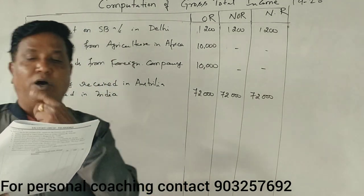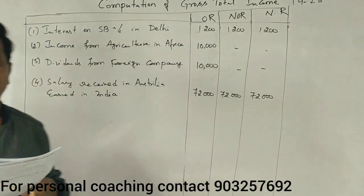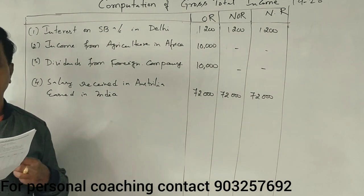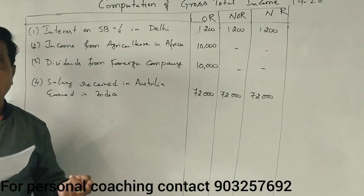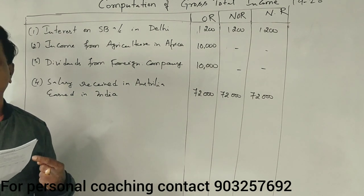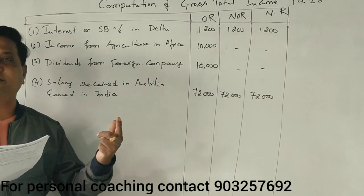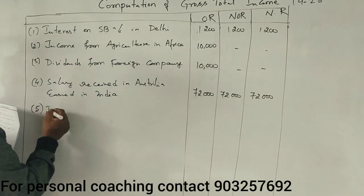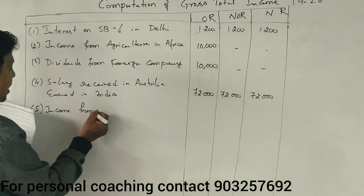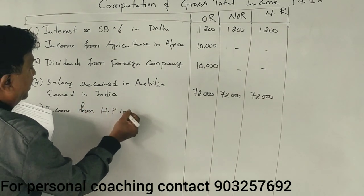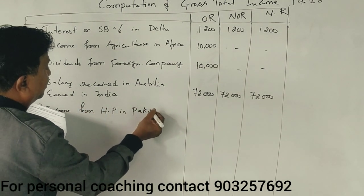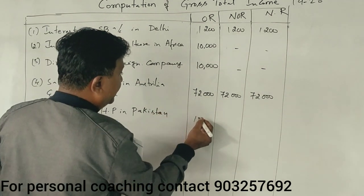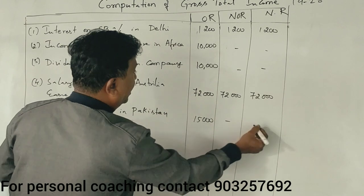Income from house property situated in Pakistan. Earn model is Pakistan, receive model is Pakistan. First case: income from house property in Pakistan — ₹15,000. First case in Matra tax market.